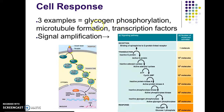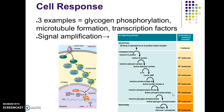Over here on the right-hand side, we have an example of glycogen breakdown, or glycogen phosphorylation. In this particular example, epinephrine — the hormone — is your first ligand, and it binds to the G-protein-linked receptor, your GPCR. It then activates a cascade of relay molecules — remember, relay molecules are also called proteins — including active G-protein, active protein kinase A, cyclic AMP, and two protein kinases.